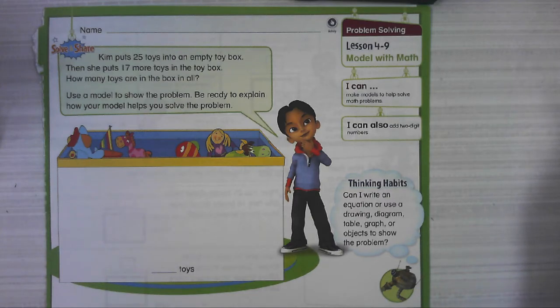Hi everybody! We are back for our last lesson in topic four and we're doing lesson four nine, modeling with math. If you'll remember, modeling just means to make a picture to show it in some way that we can all see it with our eyes.